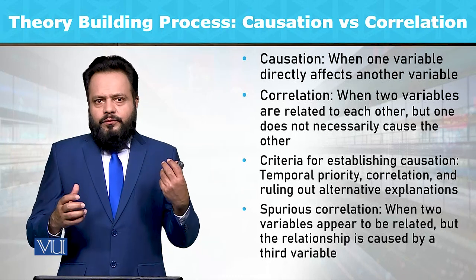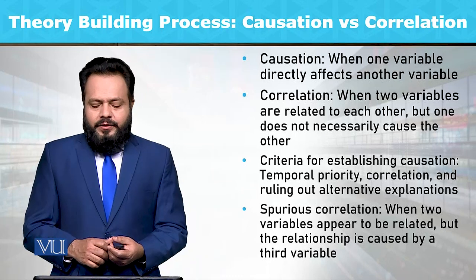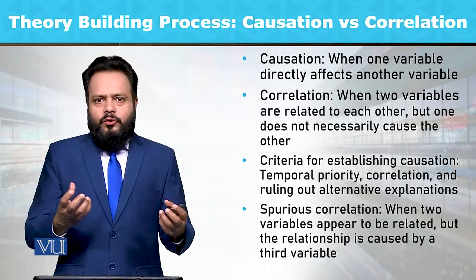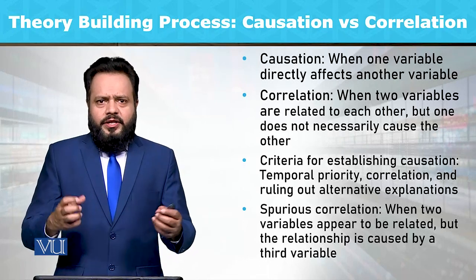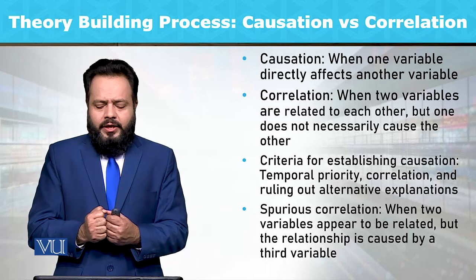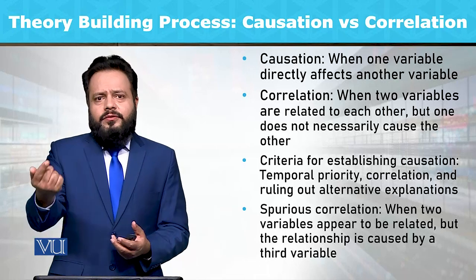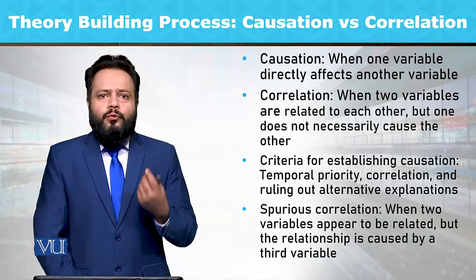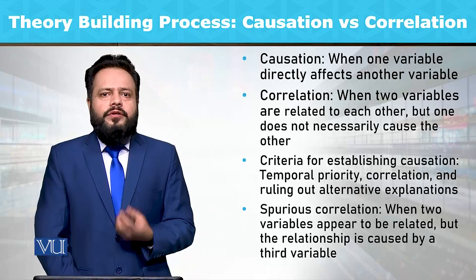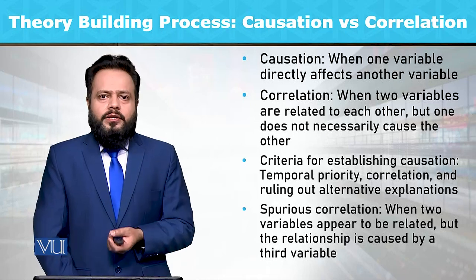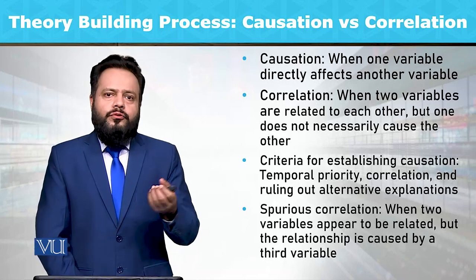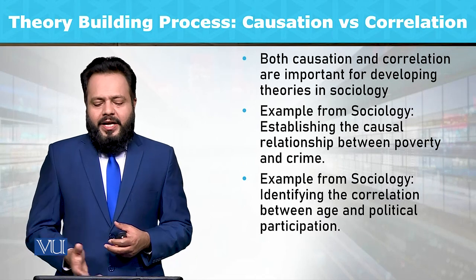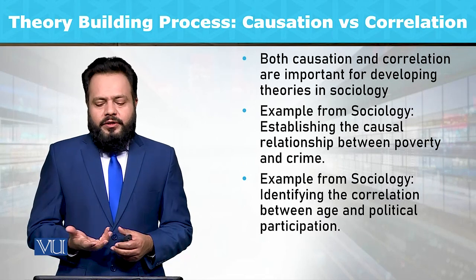اس میں spurious correlations ہوتے ہیں — جیسے جب دو variables کے بارے میں ہمیں لگ رہا ہوتا ہے کہ شاید یہ interrelated ہیں، لیکن وہ relationship اصل میں کسی third variable یا C variable کی وجہ سے ہو رہی ہوتی ہے۔ ایسے variables کو spurious variables کہتے ہیں جنہیں research کے اندر control کرنا ضروری ہوتا ہے، اسی وجہ سے انہیں control variables بھی کہتے ہیں۔ (There are spurious correlations — when we think two variables are interrelated, but the relationship is actually due to a third/C variable. Such variables are called spurious variables which must be controlled in research — hence also called control variables.)